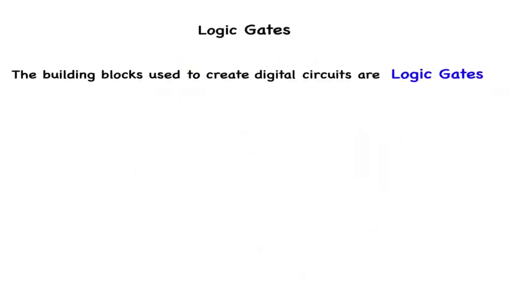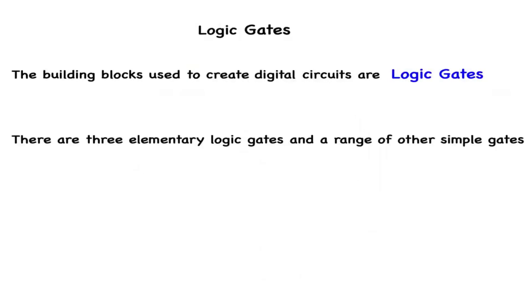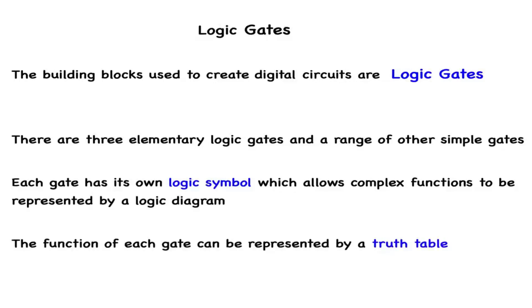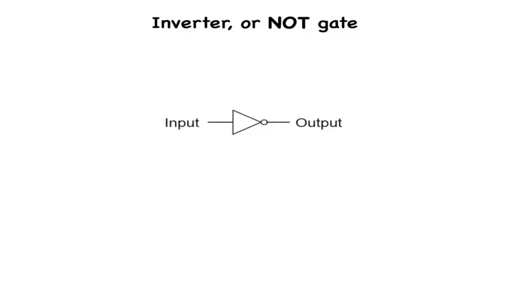Logic gates are the building blocks used to create digital circuits. There are three elementary logic gates and a range of other simple gates. Each gate has its own logic symbol, which allows complex functions to be represented by a logic diagram. The function of each gate can be represented by a truth table. Rather than drawing out a network of switches and transistors, gate symbols are used in conjunction with their logic truth tables to symbolize logic functions. This is the symbol for an inverter or NOT gate. It is described by its truth table — it has one input and one output.